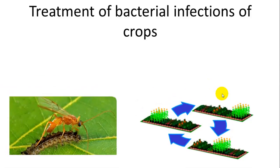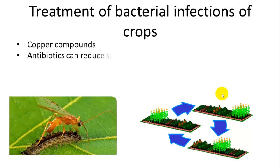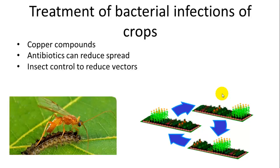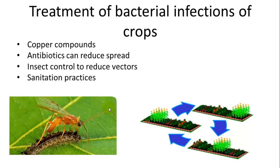Once you have a bacterial infection, it can be quite hard to treat. They aren't as common as other infections in crops, but they do occur. Treatments include high concentrations of copper compounds and antibiotics — some antibiotics can't cure an infected plant but can reduce the spread to other leaves and plants. You can also use insects, such as a wasp that lays its eggs in caterpillars, to reduce vectors of the disease.